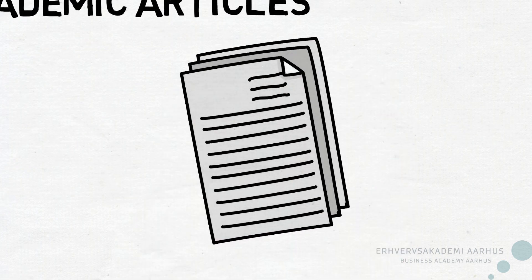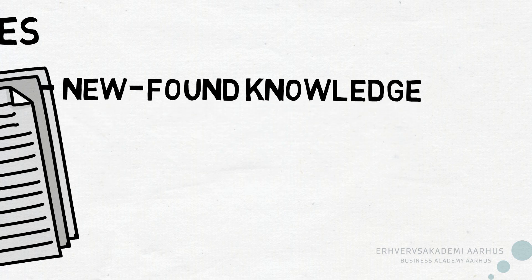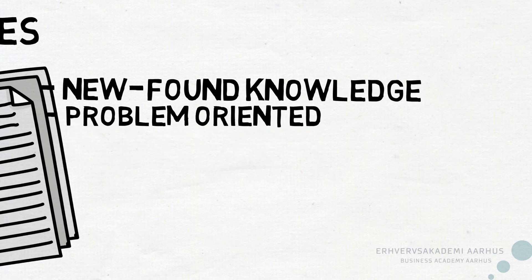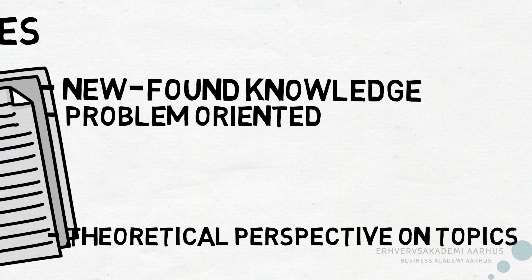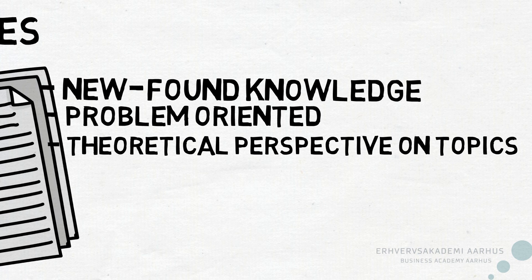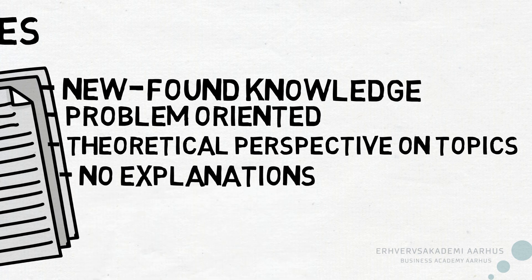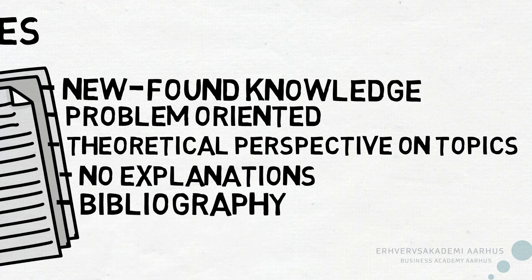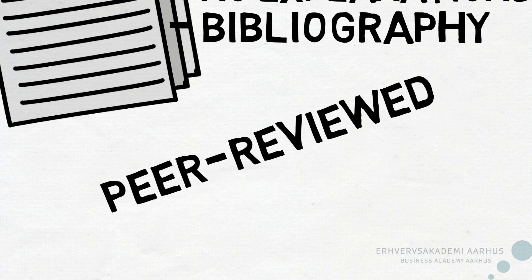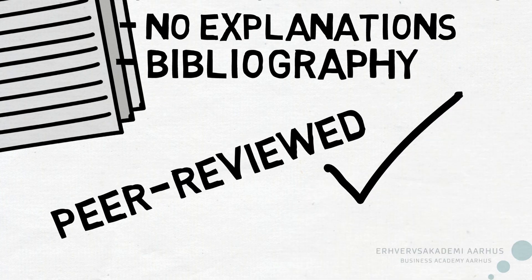An academic article conveys new research-based knowledge. It is focused on specific topics and problems, which are always put in a theoretical perspective. You'll find no explanations of topics or theories. In the bibliography, you'll find all the academic sources essential for finding either other relevant texts or authors. Many academic articles are only published after other respected researchers have evaluated the content — this is called peer reviewing.